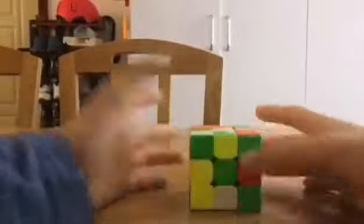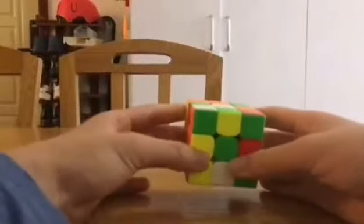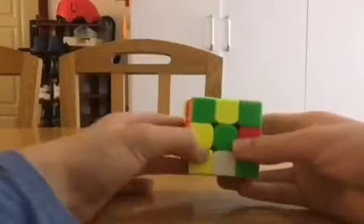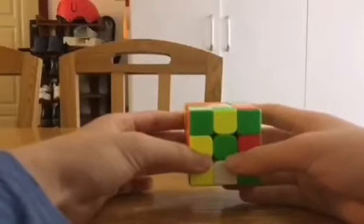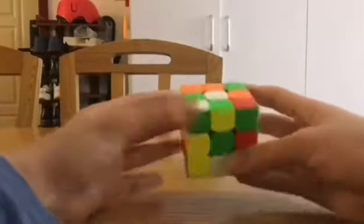The first solve is a 4.94, and it's also a full step. He is going to do a yellow cross from this angle, but he is also going to look ahead into the first pair.